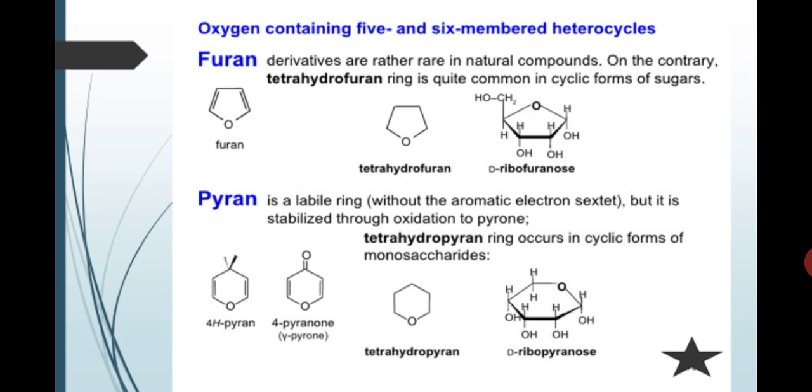Oxygen-containing five and six membered heterocycles. Oxygen containing furan. Pyran derivatives are rather rare in natural compounds. On the contrary, tetrahydrofuran ring is quite common in cyclic form of sugars. It is deoxyribofuranose.